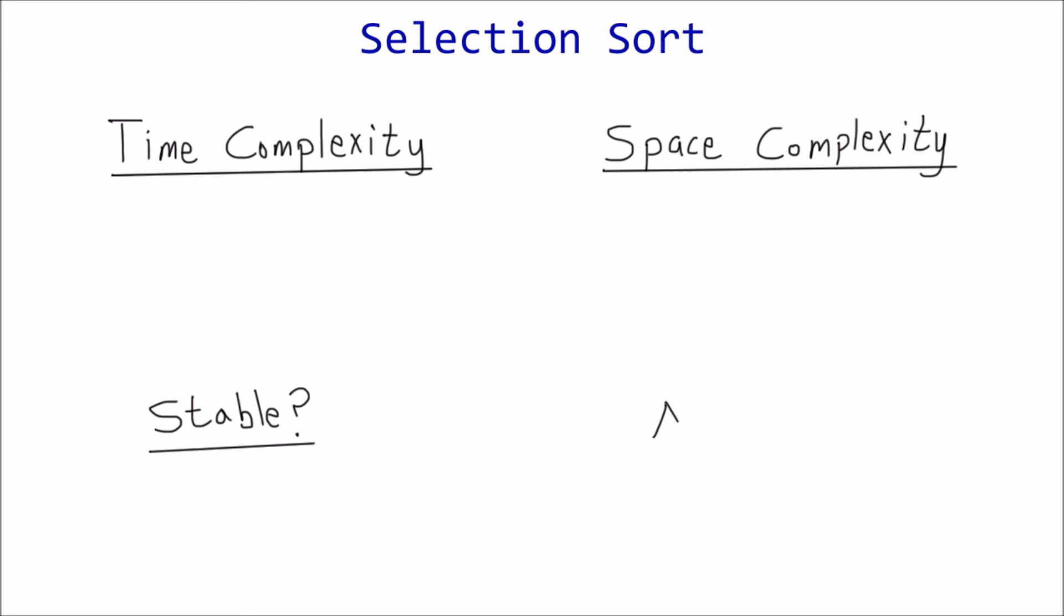Okay, time to conclude this tutorial with a quick analysis of the algorithm. I'll structure this around four key properties of sorting algorithms: time complexity, space complexity, stability, and adaptability.